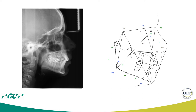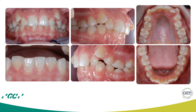It was decided to extract four premolars, also because the patient presented a certain amount of crowding. This, together with the fact that she has lip incompetence, that her incisors are proclined and in front of the skeletal base, and that she has a posterior pattern of growth, led me to decide to extract four premolars.